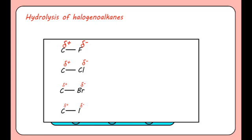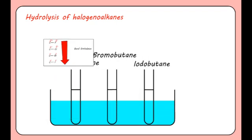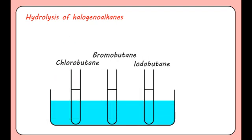This is because bond polarity is just one factor that controls rates of reaction. The predominant factor is bond enthalpy for the carbon to halogen bond. Bond enthalpies decrease going down the group, with the carbon to fluorine bond being the strongest. In our experiment, the weakest carbon to halogen bond is the carbon to iodine bond. Therefore, we would expect to see the iodobutane sample showing the precipitate first, followed by bromobutane and then chlorobutane.